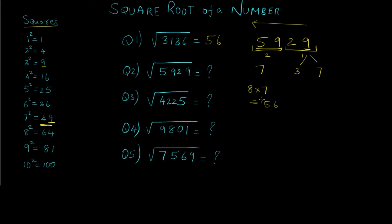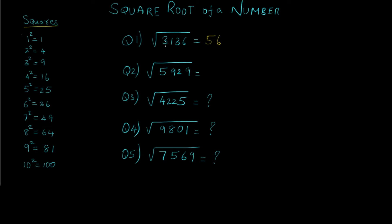We compare 56 with 59. Since 59 is greater than 56, we select the greater number out of 7 and 3, which is 7. So the final answer is 77.